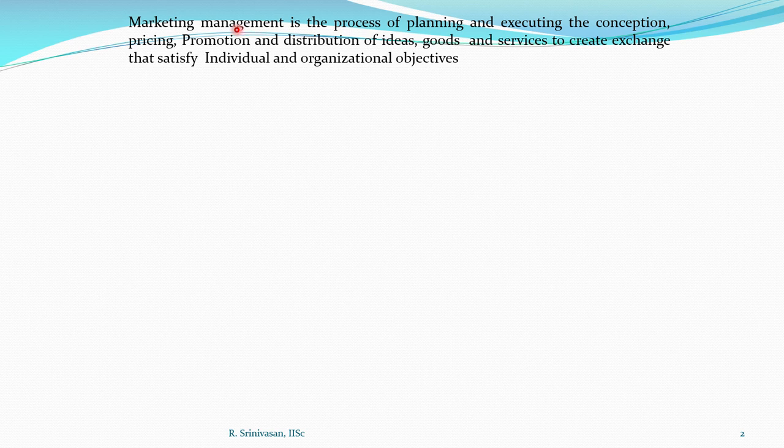Now, how can we use all this to give a formal definition for marketing? When we look at a formal definition of marketing, we add the management aspect. So we are looking at marketing management as the process of planning and executing the conception, pricing, promotion and distribution of ideas, goods and services to create exchange that satisfy individual and organizational objectives.